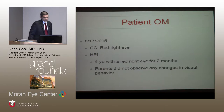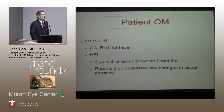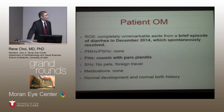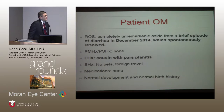This is patient OM. He's a four-year-old male. He was initially seen by an outside ophthalmologist in August of 2015, complaining of a red right eye for the past two months. The parents did not observe any changes in his visual behavior at that time. Review of systems was significant for a brief self-limited episode of diarrhea in December of 2014. His family history was significant for a cousin with pars planitis.